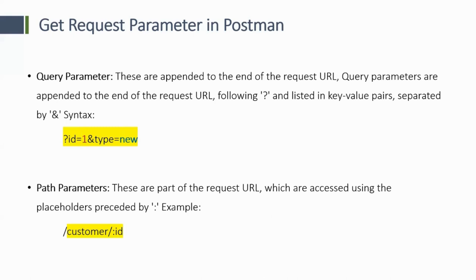In the previous lectures, we covered collections and variables. Collections and variables are also a kind of parameter, but they are variables. Here, we have to send data to the server — we send it as a request parameter. We call these GET request parameters, which are the query parameters and path parameters.